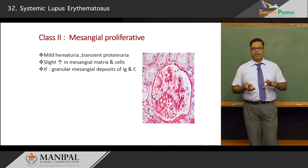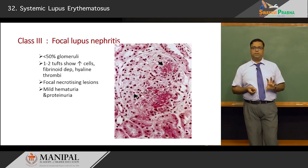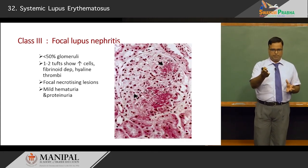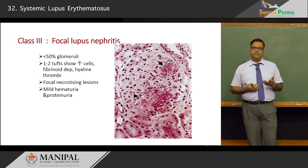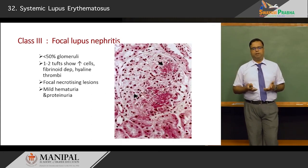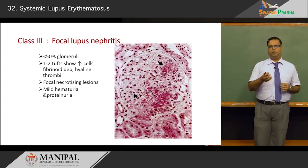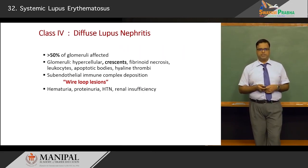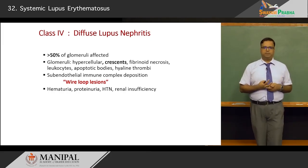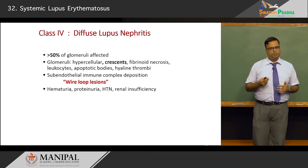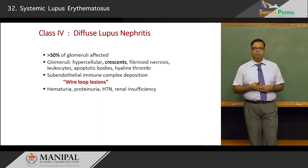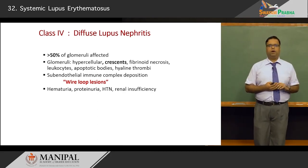Class three is focal lupus nephritis, where less than 50 percent of glomeruli are involved. The tufts show increased fibrinoid deposits and small hyaline thrombi within capillary lumens, with hematuria and proteinuria. Class four is diffuse lupus nephritis, where more than 50 percent of glomeruli are affected. Glomeruli become hypercellular and develop crescent formations, along with fibrinoid necrosis, thrombi, and sub-endothelial immune complex deposits producing characteristic wire loop lesions, typical of diffuse lupus nephritis.